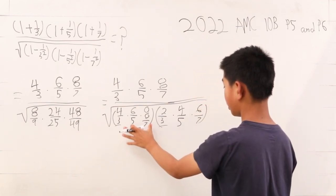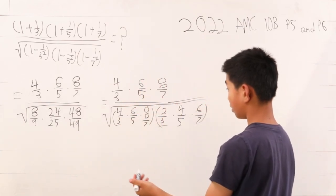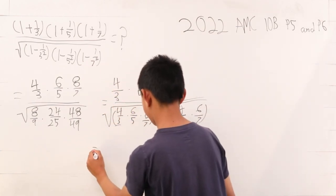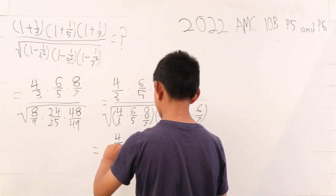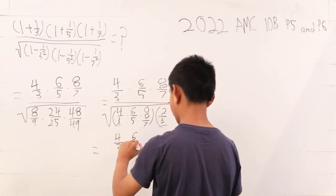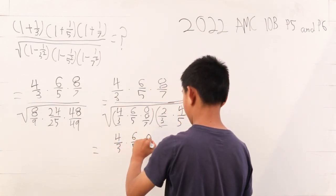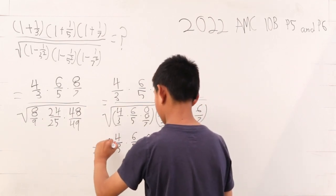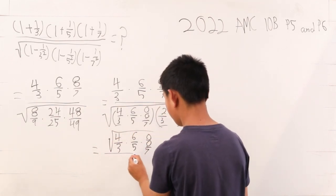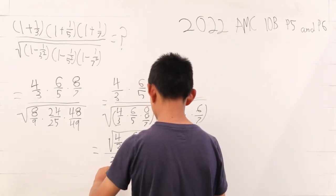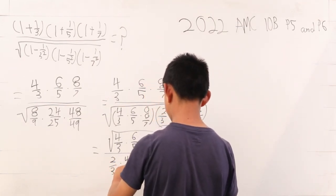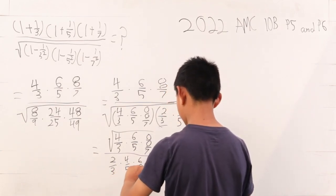We see that these two are the same, so we can just divide it. On the top, you get the square root of 4/3 times 6/5 times 8/7. And on the bottom, we just get the square root of 2/3 times 4/5 times 6/7.